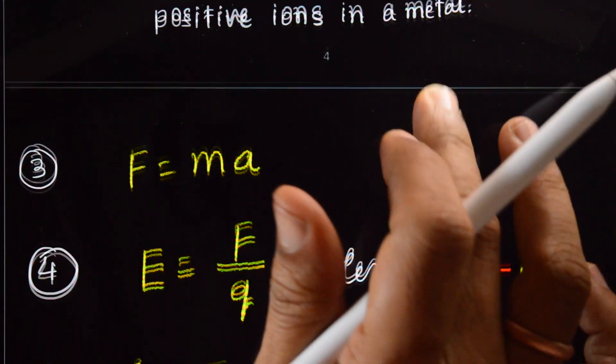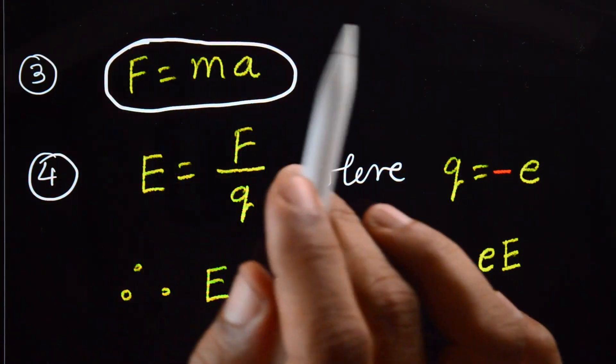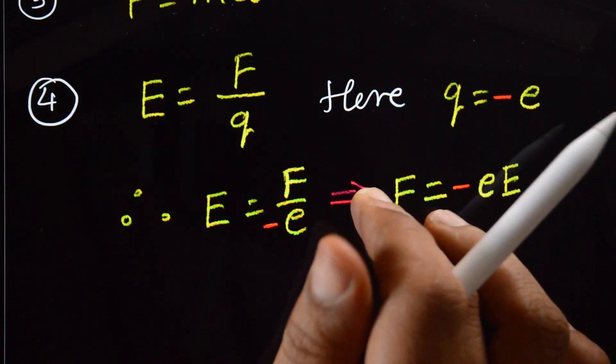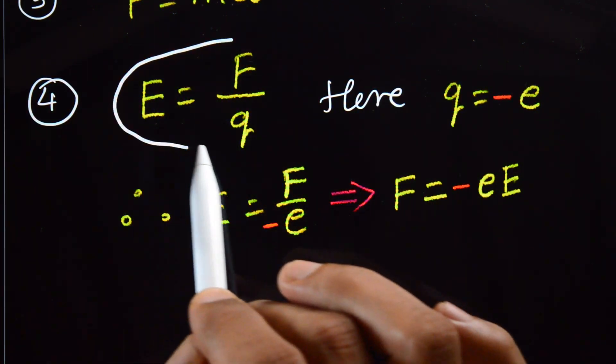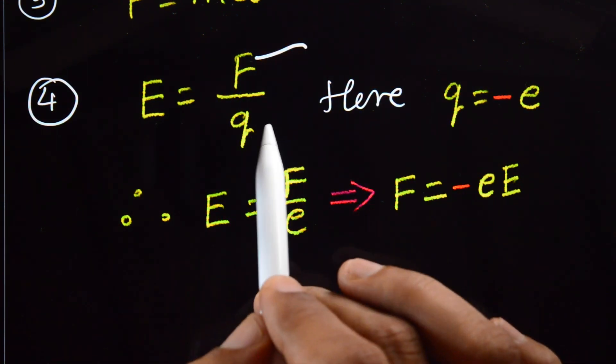And the third thing you should know: F equals ma. And the electric field definition: E equals F divided by q.